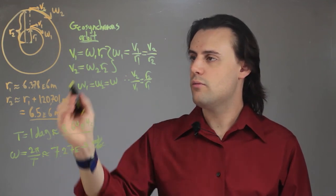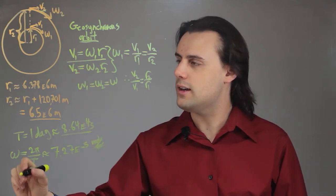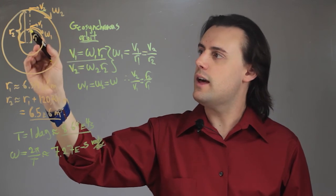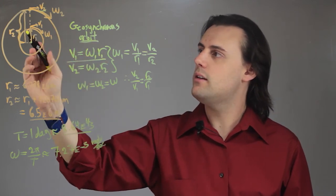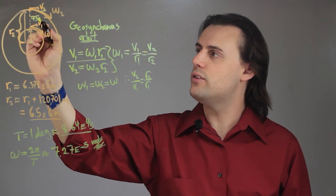We can simply use this equation relating linear and angular velocity to calculate what the linear velocity of an object that is in a geosynchronous orbit would be if it's 75 miles above the surface of the Earth.